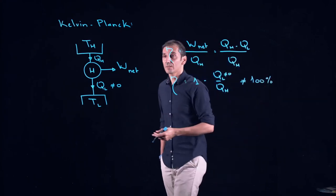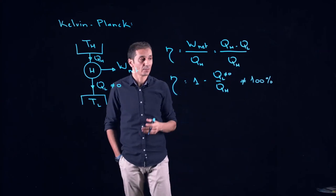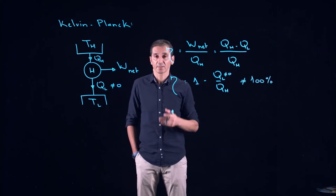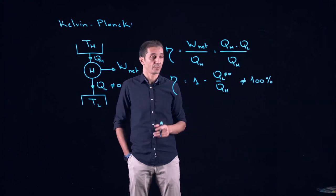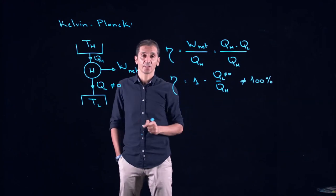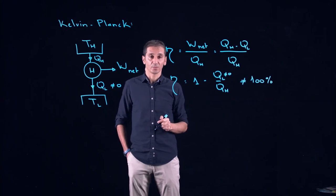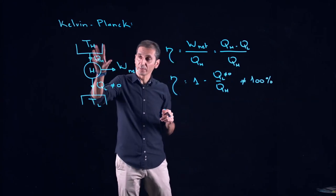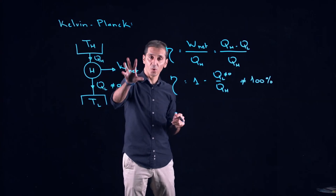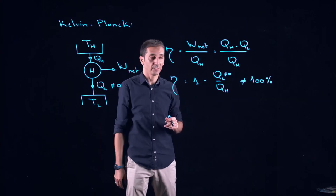To summarize, Kelvin-Planck statement of the second law of thermodynamics killed our dream of designing heat engines that are 100% efficient, meaning that we can turn all the heat in here into work without rejecting heat as QL.